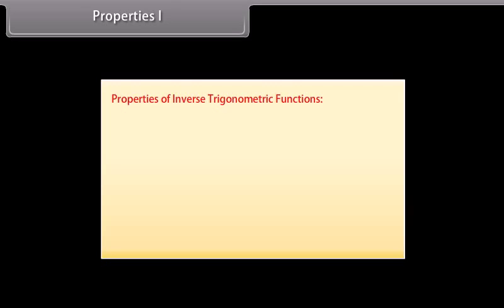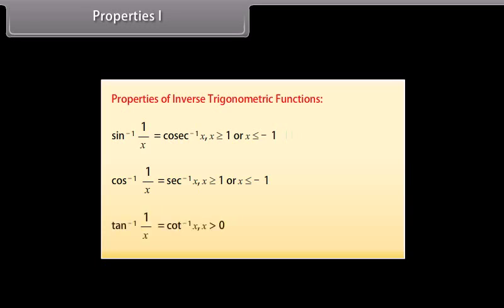Let's learn about properties of inverse trigonometric functions. Property 1: sin⁻¹(1/x) = cosec⁻¹ x, for x ≥ 1 or x ≤ −1. cos⁻¹(1/x) = sec⁻¹ x, for x ≥ 1 or x ≤ −1. tan⁻¹(1/x) = cot⁻¹ x, for x > 0.